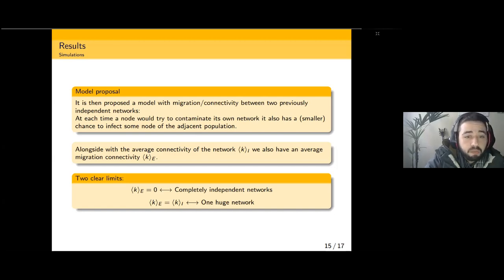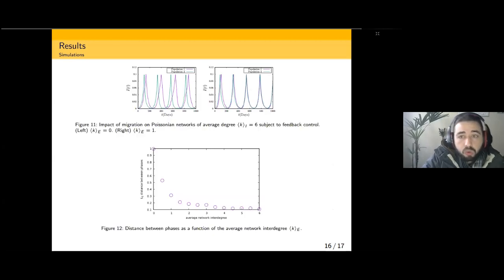At each time, a node will try to contaminate its own network, but it also has a smaller chance to infect some node of the adjacent population. We simply make few connections between two previously unrelated networks. One would expect that given enough time and connections, eventually these epidemic waves would be somehow synchronized. In a simple model like this, we have two clear limits: a lower limit where there are no connectivity between two populations, leading to a system with two completely independent networks.